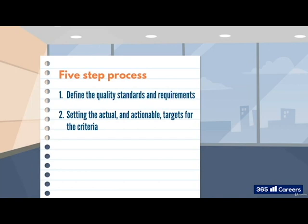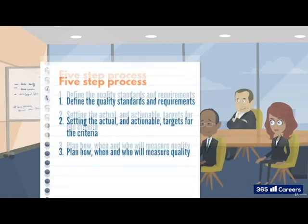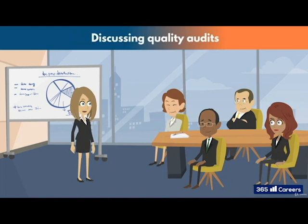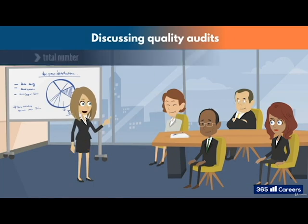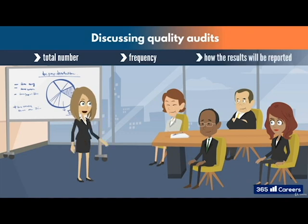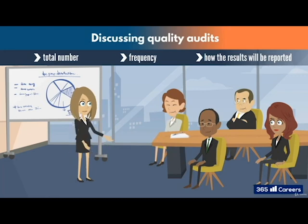After steps 1 and 2 have been completed, the third step of the process is to plan how and when to measure quality and who will do it. The project manager and the stakeholders need to agree on how quality audits will be performed once the project moves into execution — things like deciding on the total number of audits, the frequency of the checks, and how the results will be reported. They need to decide on an owner of the quality checks, and if there is no appropriate employee within the organization, then they must seek external experts.